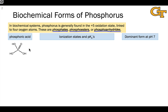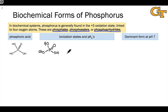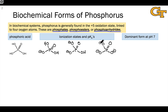Phosphoric acid is the simplest form of biochemical phosphorus. Let's list the ionization states of phosphoric acid and determine its dominant form at pH 7. The three ionization states differ in the number of protons. The first involves loss of a single proton and carries a negative one charge. The second carries a negative two charge with loss of two protons. The third involves loss of three protons, contains no protons, and has an overall charge of negative three — this is the phosphate anion.